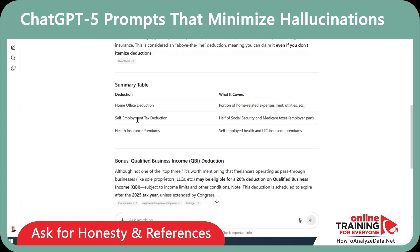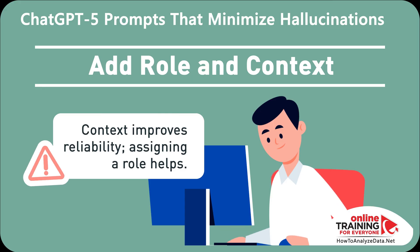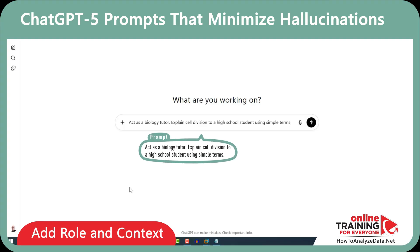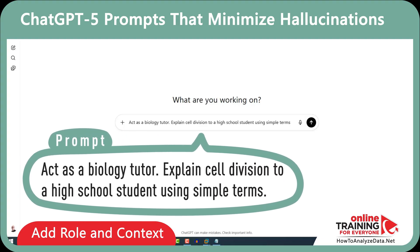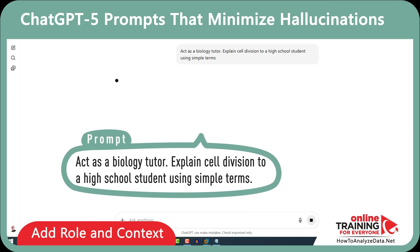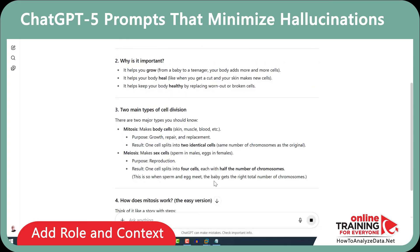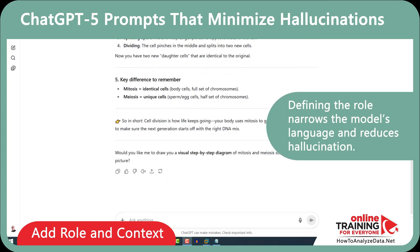Now let's look at another trick to improve accuracy: you can add role and context. The key here is realizing that context matters — if you assign a role, the output becomes more reliable. Let me demonstrate using this prompt: "Act as a biology tutor. Explain cell division to a high school student using simple terms." You can see that ChatGPT delivered a grounded, simplified explanation. Defining the role narrows the model's language and reduces hallucinations.